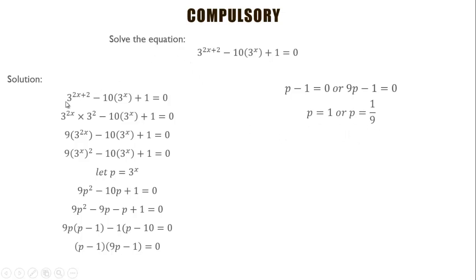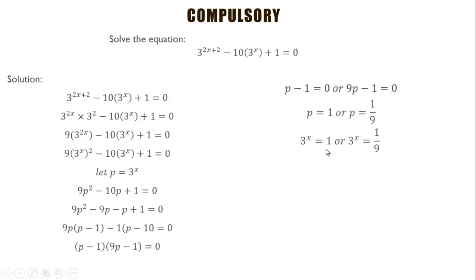By the original equation, we need to do back substitution — replacing p with 3^x. That gives us the equations: 3^x = 1 and 3^x = 1/9.